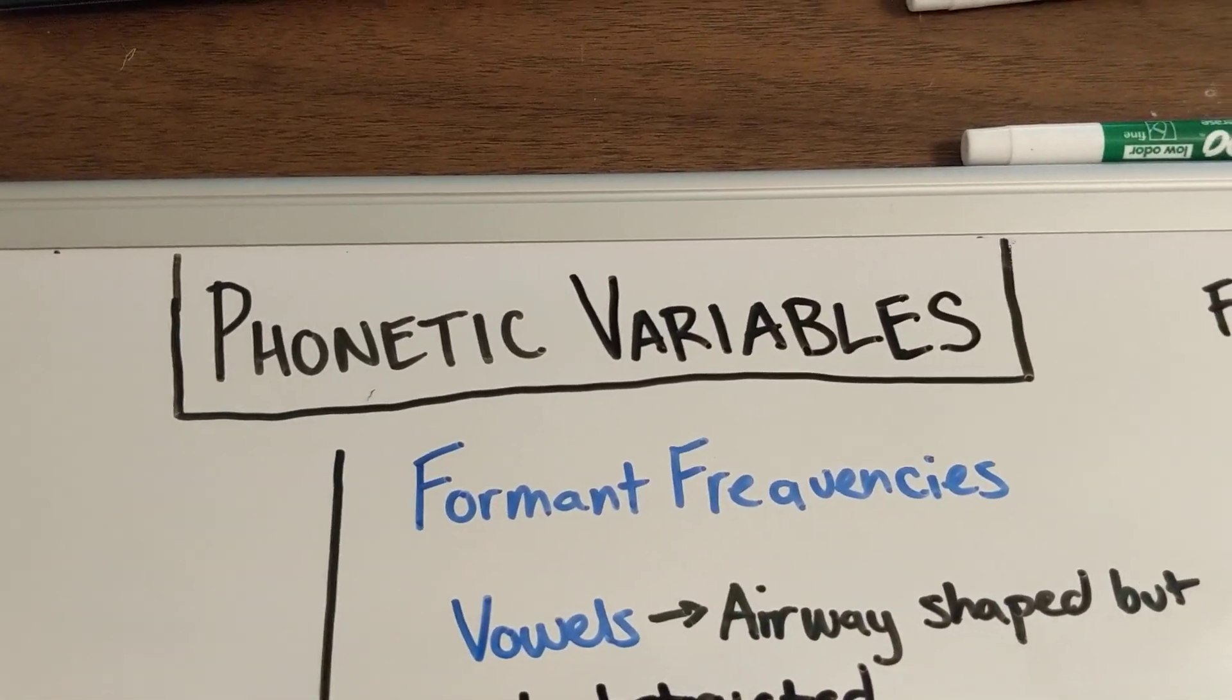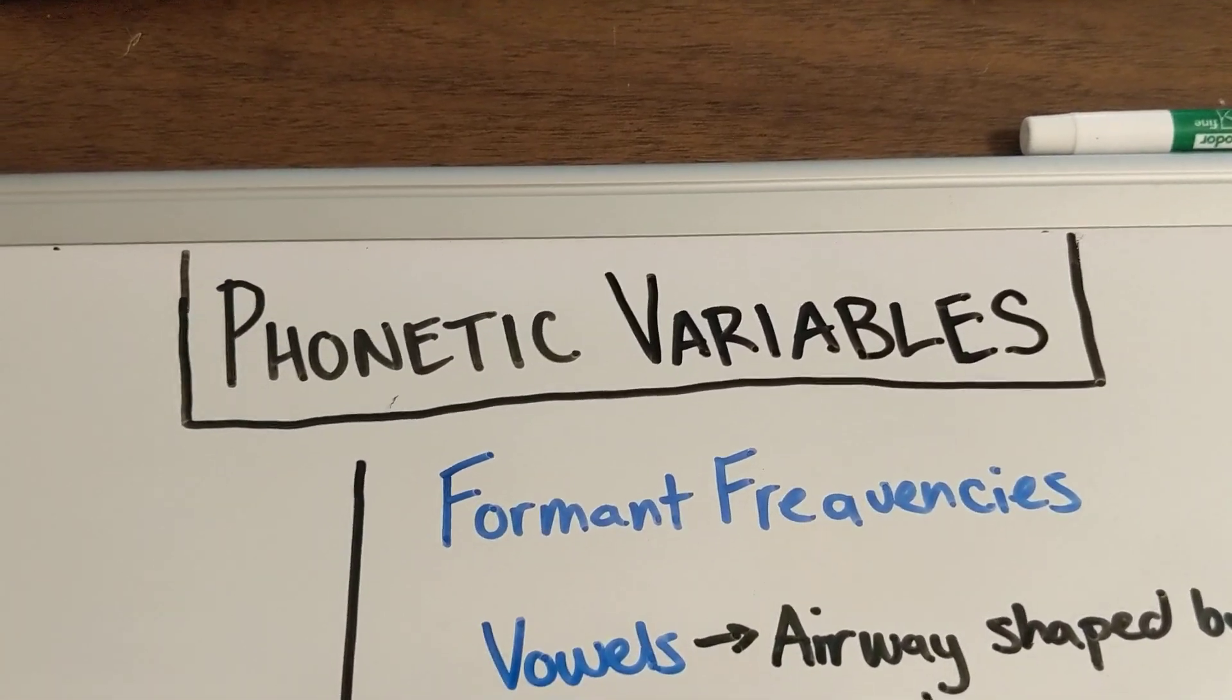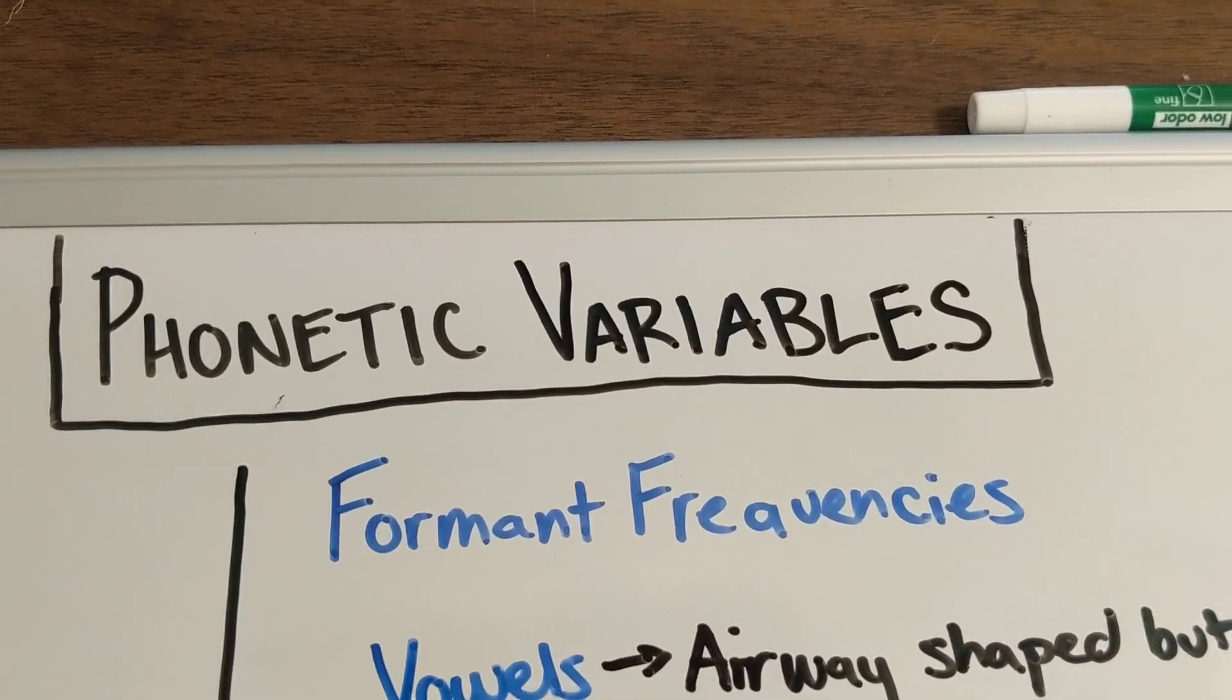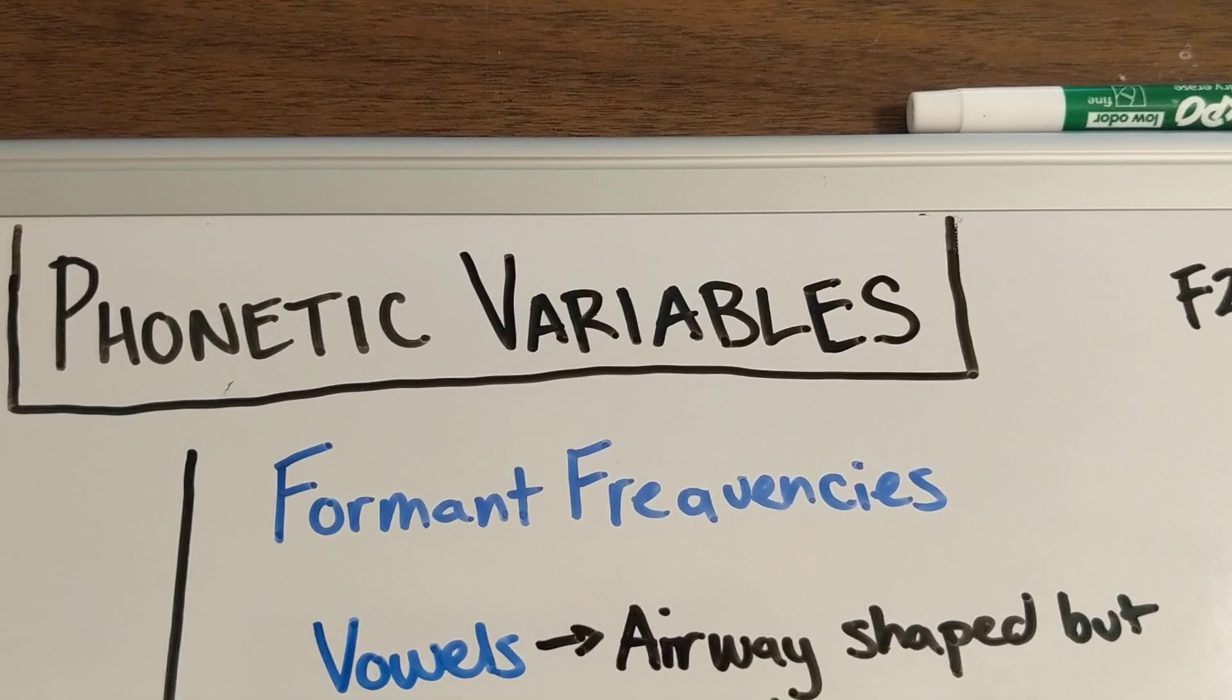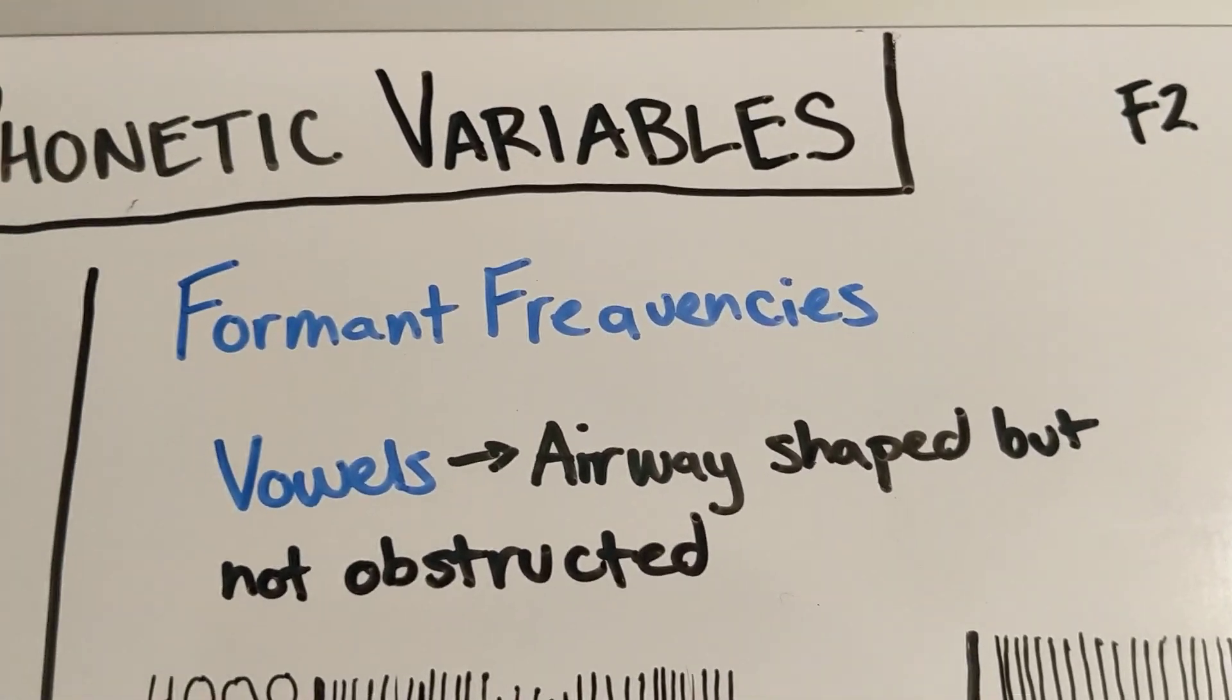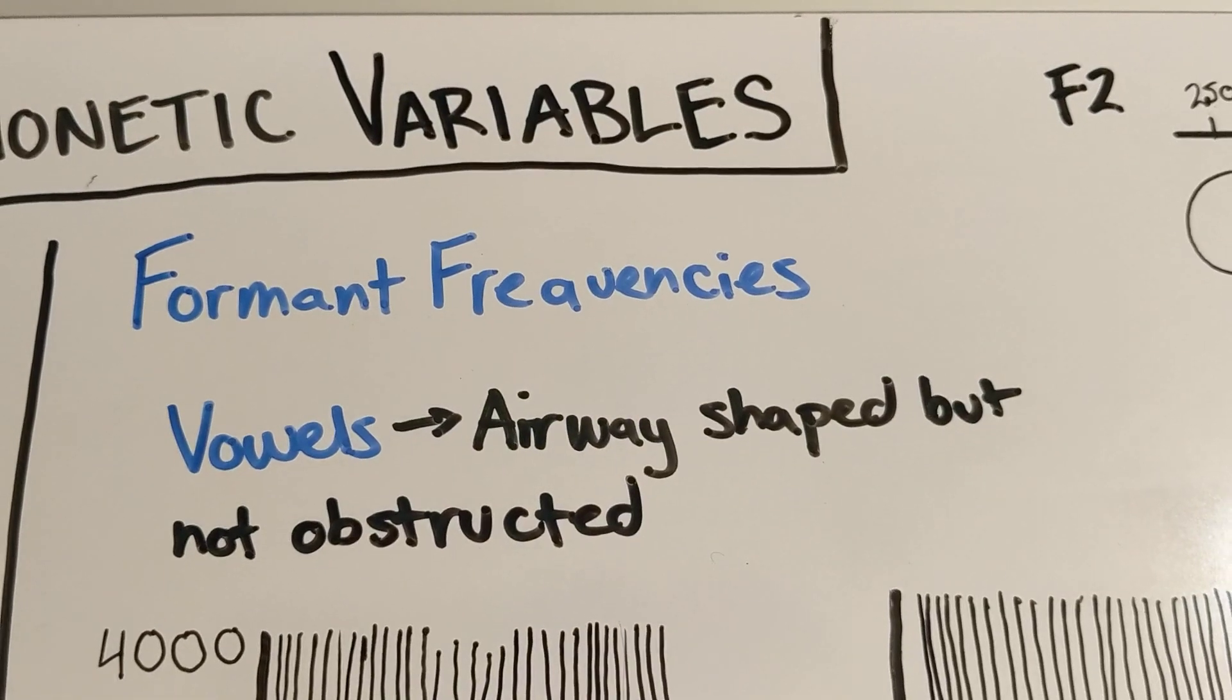All right. Hi, and welcome to another lesson for language development. So in the last lesson, we started talking about phonetic variables. In this lesson, we're going to finish by talking about a slightly more complicated variable, which is called the formant frequency. So we're going to talk about formant frequencies in this second part of this lesson.